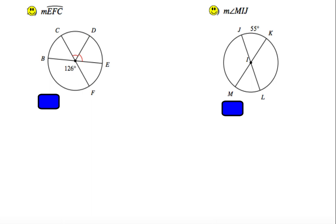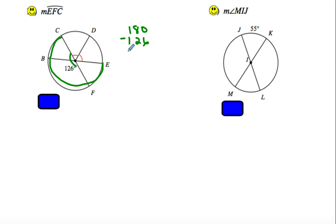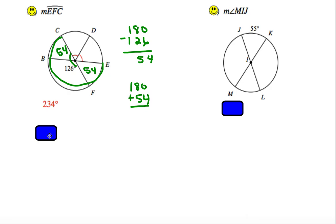For arc EFC going around this way: we know these two add to 180. So 180 minus 126 gives 54 degrees. If this is 54 degrees, this vertical angle is also 54 degrees. We also know the other half is 180. So it's 180 plus 54, which equals 234.